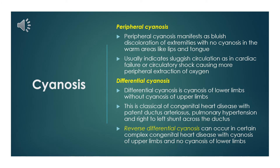Peripheral cyanosis manifests as bluish discoloration of the extremities with no cyanosis in warm areas like the lips and tongue. It usually indicates sluggish circulation, as in cardiac failure or circulatory shock, causing more peripheral extraction of oxygen.